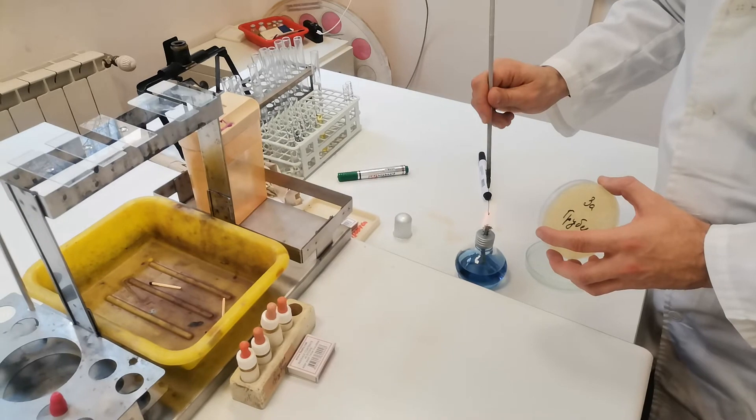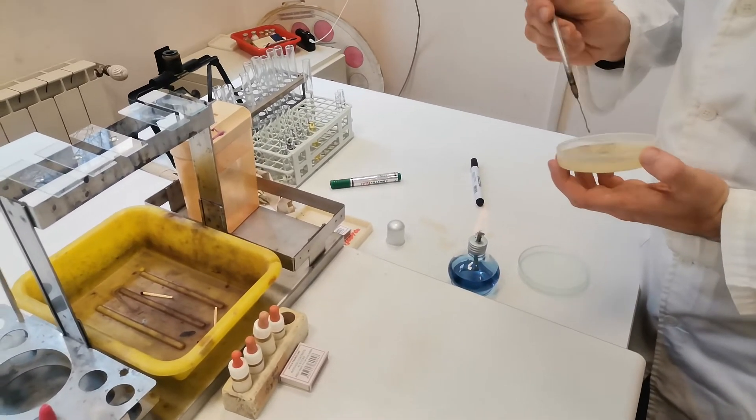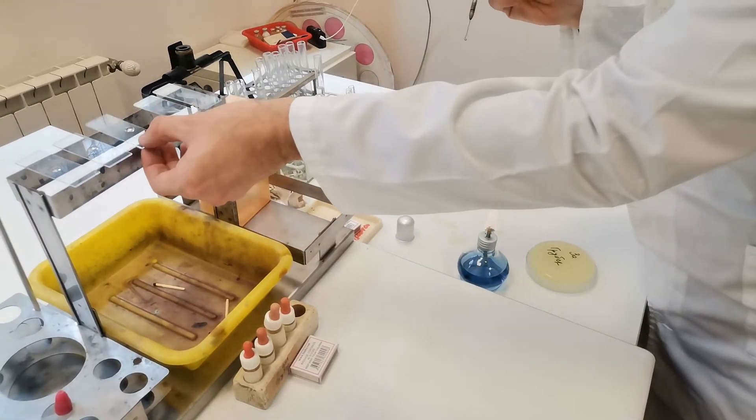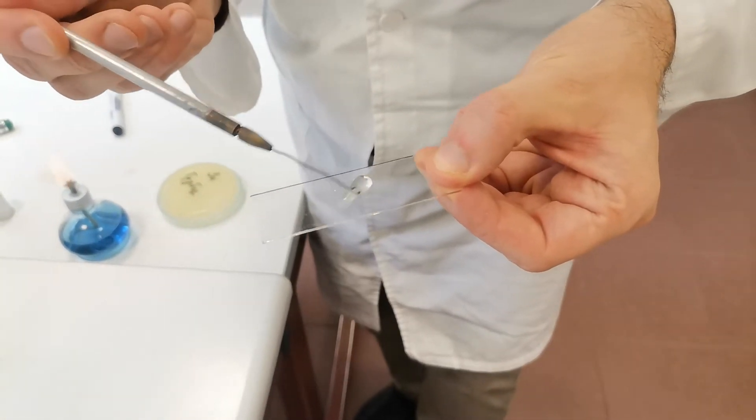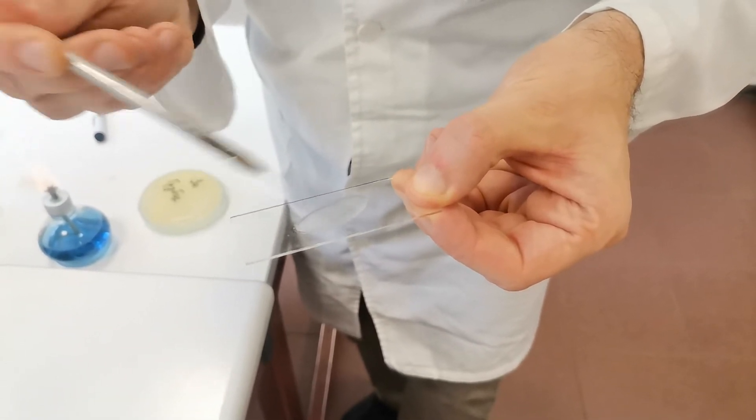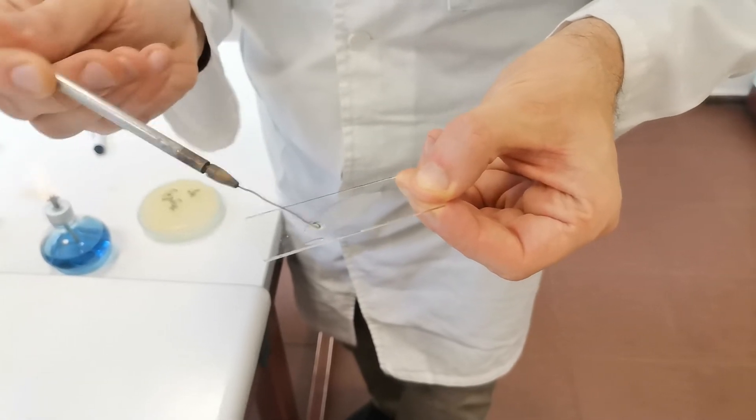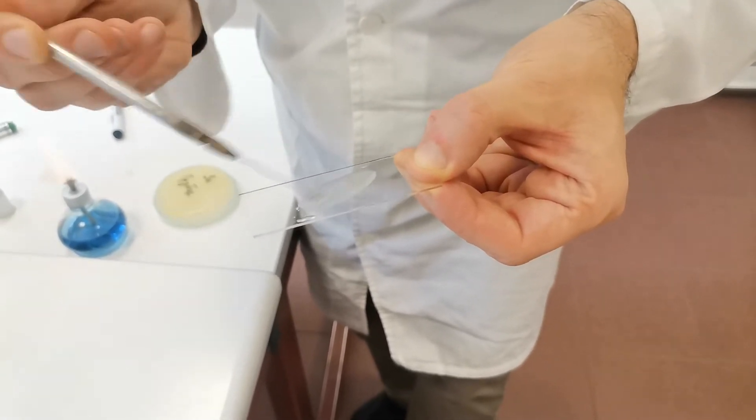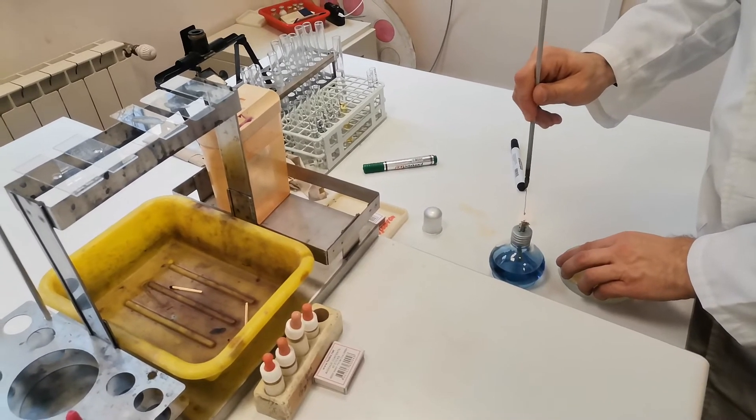First, I need to sterilize the loop, of course. This one stays cloudy. It looks negative at first glance.